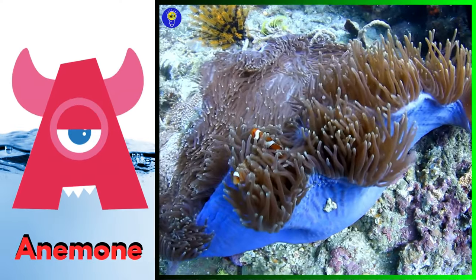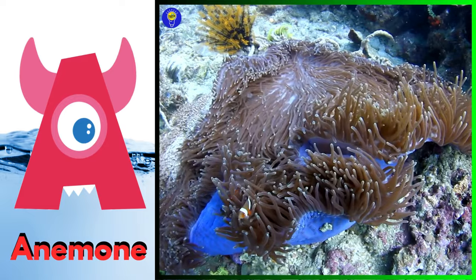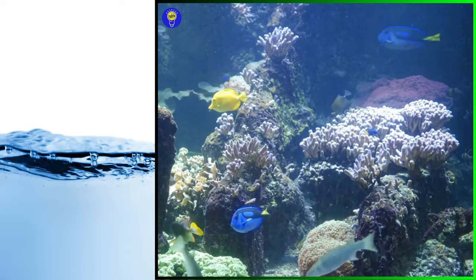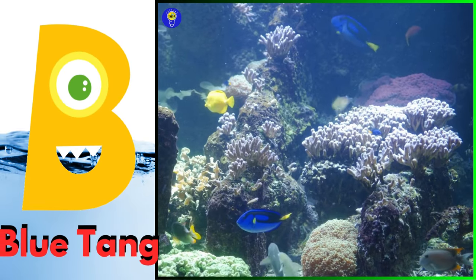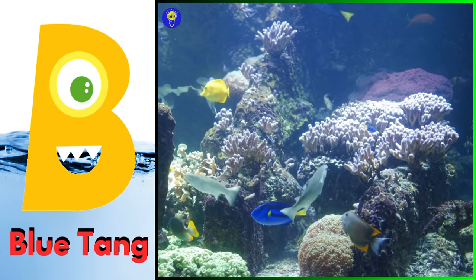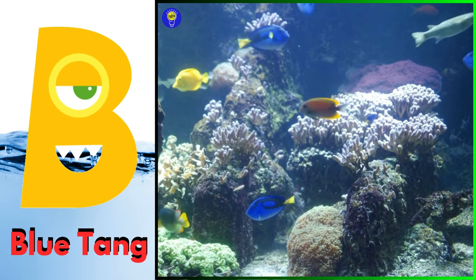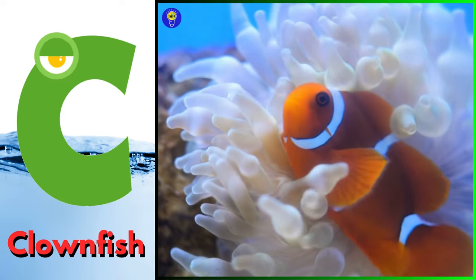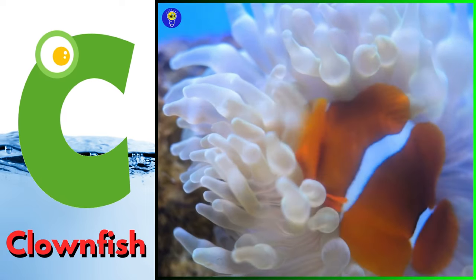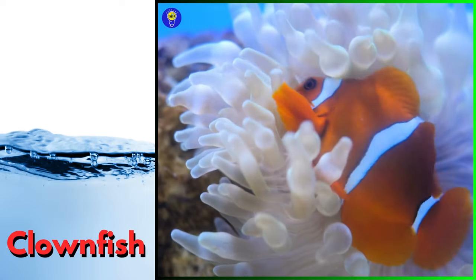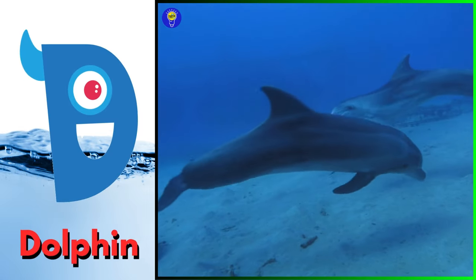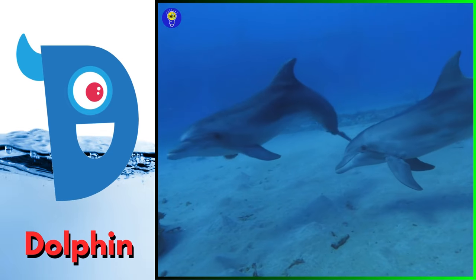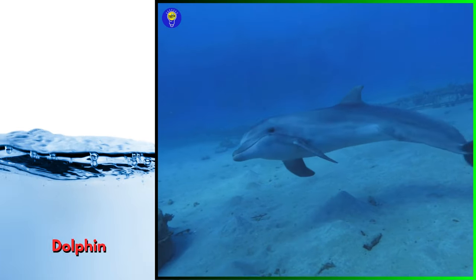A is for anemone, ah ah, anemone. B is for blue tang, buh buh, blue tang. C is for blowfish, kuh kuh, blowfish. D is for dolphin, duh duh, dolphin.